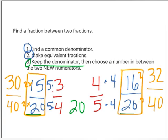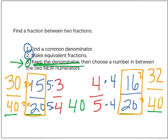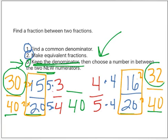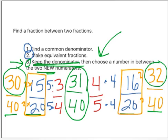Now let's try step number three again. Keep the denominator. Now we have forty as our denominator, so let's try forty. Now we're going to choose a number between our two new numerators. Choose a number between thirty and thirty-two. Now we have one — thirty-one is in between. So my fraction in the middle is thirty-one-fortieths.